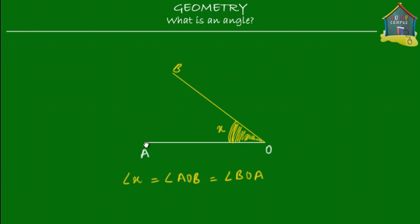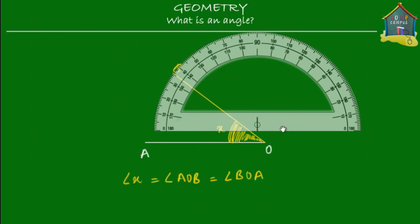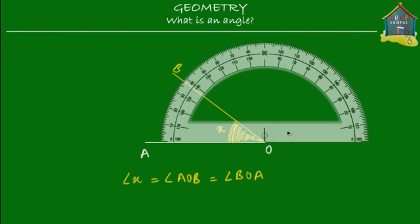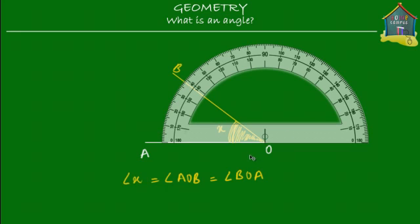To measure angles we use a geometrical instrument called a protractor. This is the center of the protractor. You place this point on top of O, because O is the center of the angle. Then to measure the angle between OA and OB, you place the zero on one of the lines — either OB or OA. Then you count the readings. Each small marking is at an interval of one degree, so angles are measured in degrees.